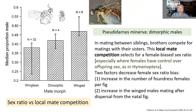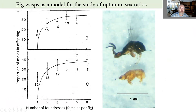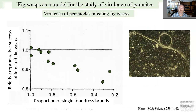Another factor is the number of foundress females entering the fig. Partly random, but large-sized figs tend to have more females entering than small-sized figs. The proportion of males is based on the number of foundresses — the highest bias is in figs where typically only one female enters, so all mating is between brothers and sisters.